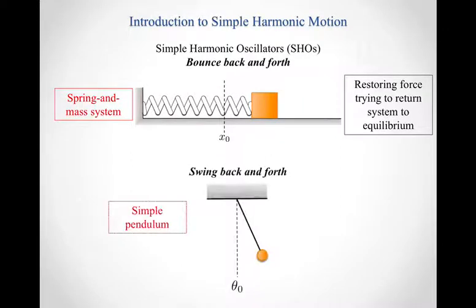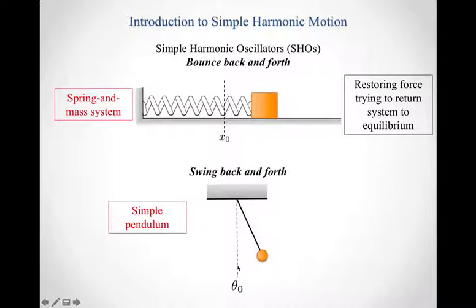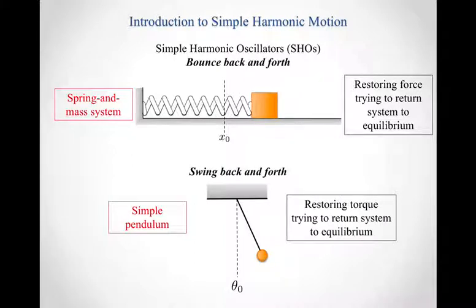The other type we'll talk about is one that swings back and forth. Our easiest example of that is a simple pendulum — basically a mass that sits at the end of a massless string. Again, there is an equilibrium position; it wants to hang straight down. But we've pulled it away and let it go, so now it swings back and forth. Instead of bouncing back and forth along a line, it swings back and forth through some angle. It does this because there's a restoring torque that tries to return the system to equilibrium.